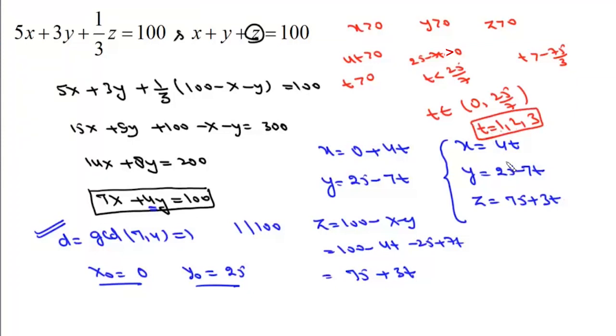If we want, we can write out the solutions. When t = 1: x = 4, y = 25 - 7 = 18, z = 75 + 3 = 78. In the same way we can find solutions when t = 2 and t = 3.